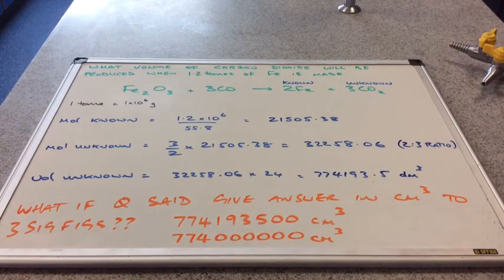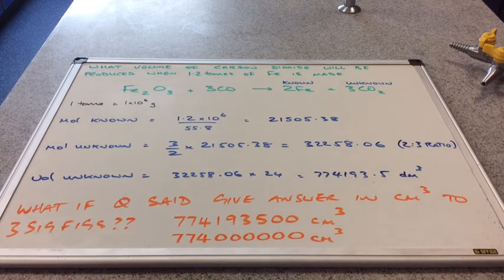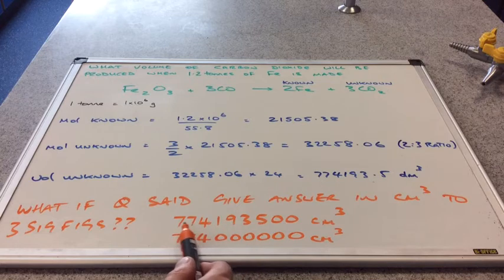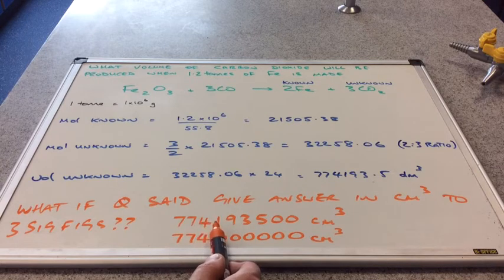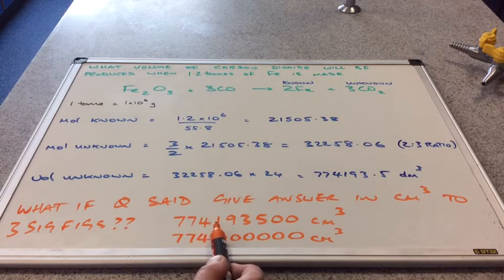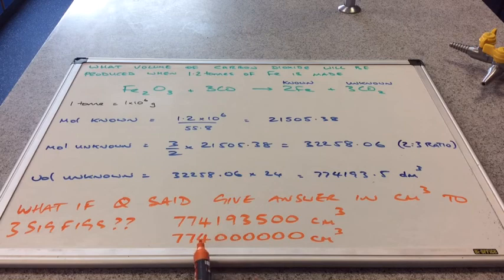And to give it to 3 significant figures, we look at the first 4 numbers. So we've got these 3 numbers here. Then we need to look at the 4th number to see if we need to do anything with this number here. Well that's a 1. Well that's not going to change that 4. So then it's 7, 7, 4.